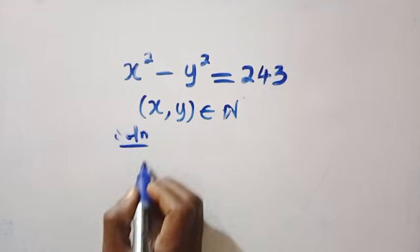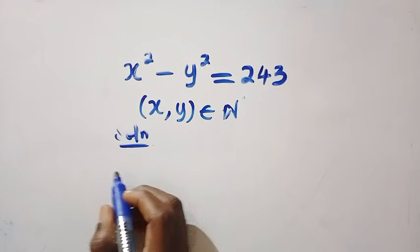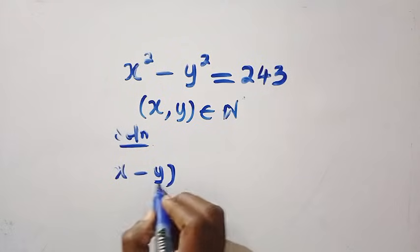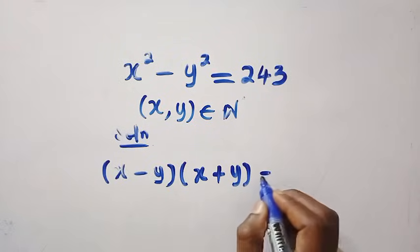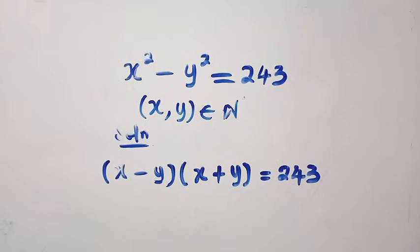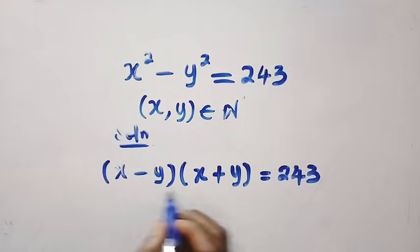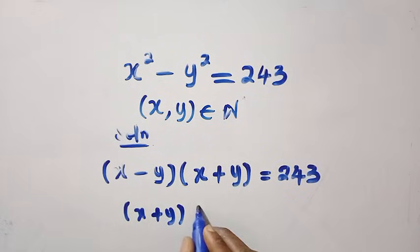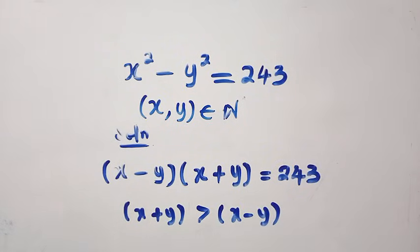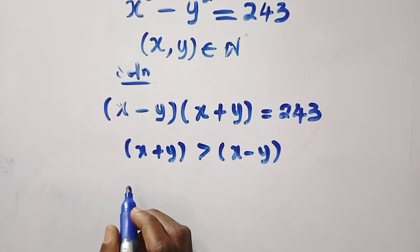The first step we are going to take is we express x squared minus y squared, splitting it into (x minus y) multiplied by (x plus y) equals 243. Based on this, since x and y are natural numbers, no matter the values of x and y we choose, x plus y is always greater than x minus y. So we are going to have some cases to consider when solving this.